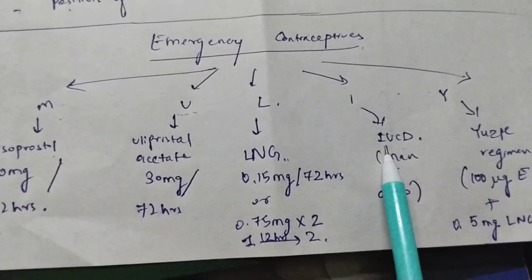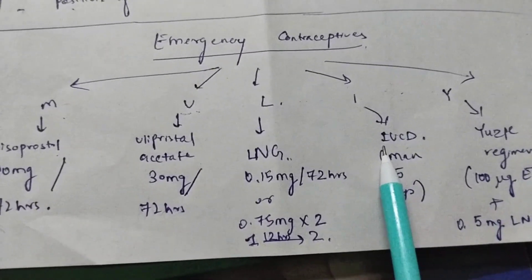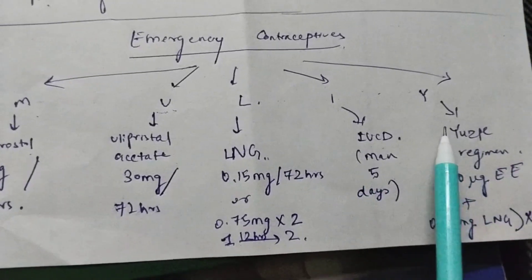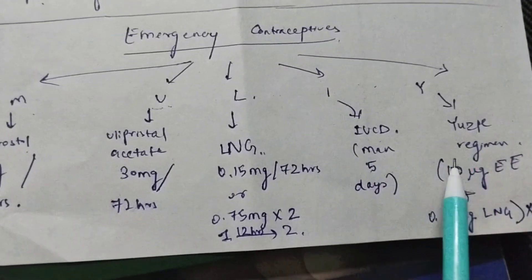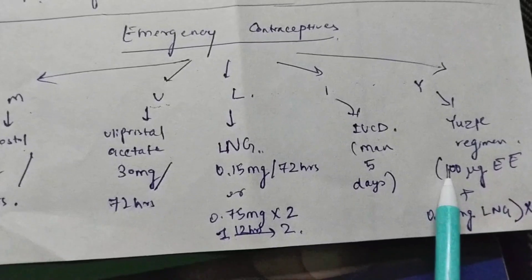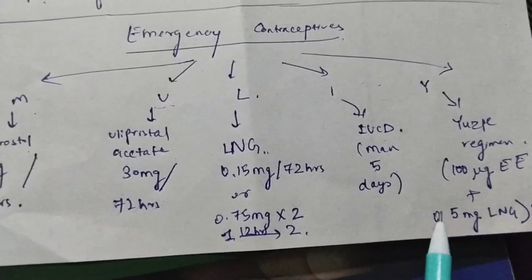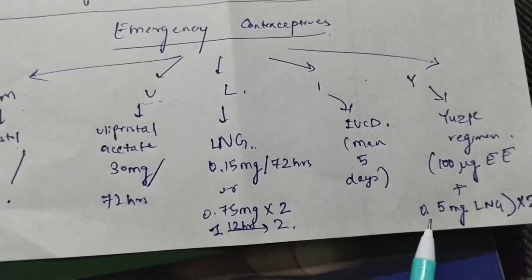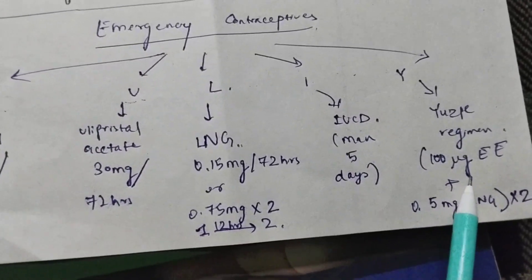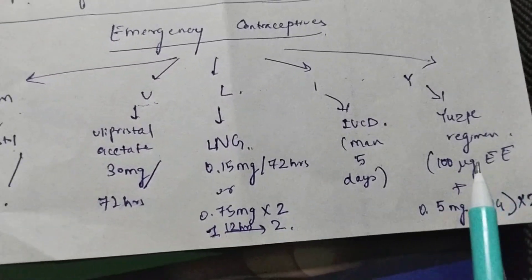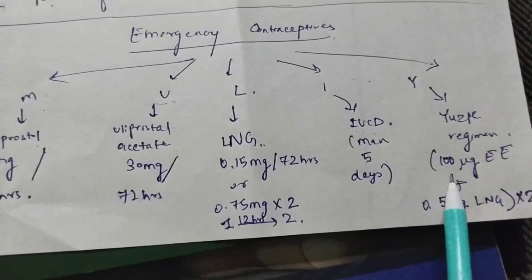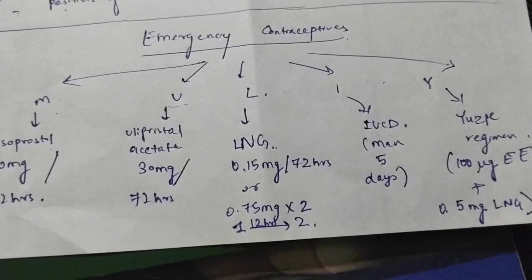I is IUCD which is effective for 5 days after intercourse. Y stands for Yuzpe regimen where we have 100 micrograms of ethinyl estradiol plus 0.5 mg of levonorgestrel. Take one dose, after 12 hours repeat the dose. This is also effective for the first 72 hours after intercourse.